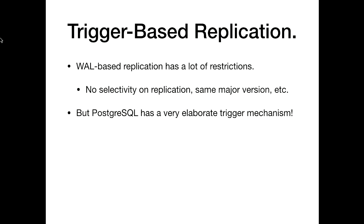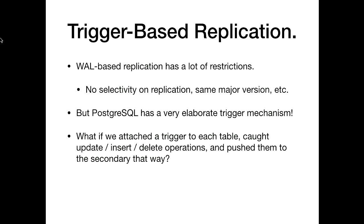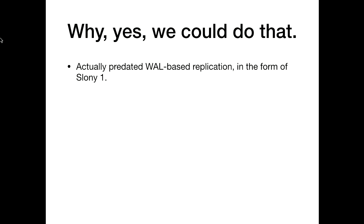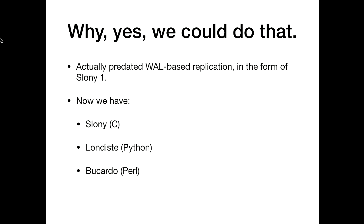But Postgres has a really elaborate trigger mechanism. What if we attach a trigger to each table, fired on insert, update, and delete operations, and push them to a secondary that way? You could write a trigger function that says 'before I apply this, I'm going to squirrel it away in a secondary table,' and then a daemon somewhere picks it up and walks it across. The author of one of the first versions of this is sitting in the front row. It actually predated WAL-based replication in the form of Slony 1. So now we have Slony, written in C; Londiste, written in Python, part of Skype tools; Bucardo, written in Perl; and some others that basically work the same way.